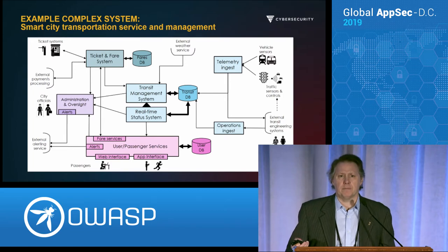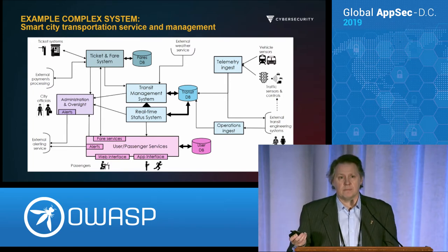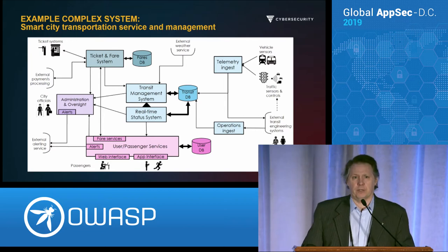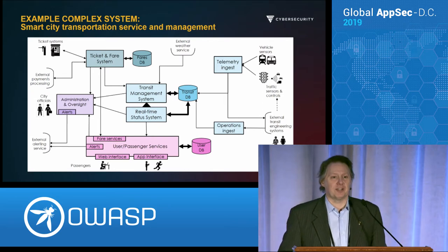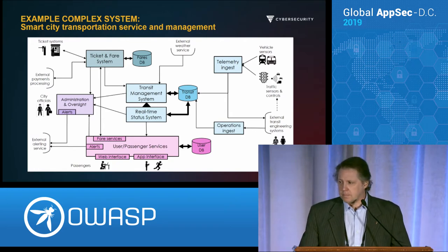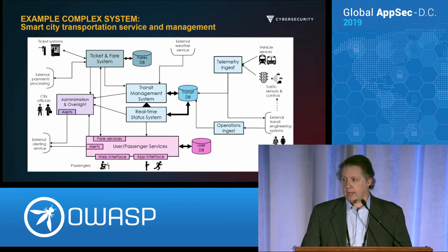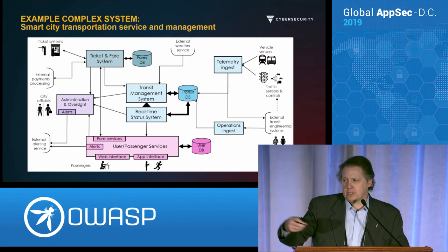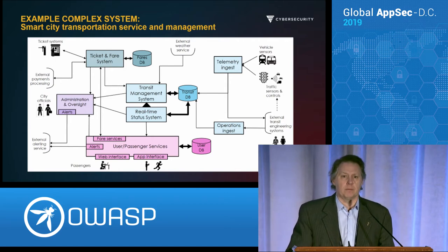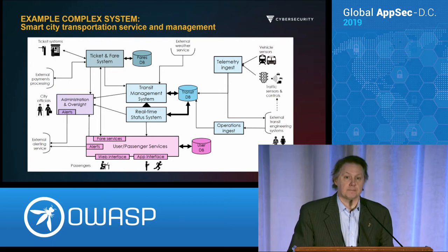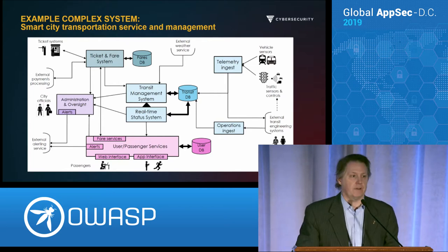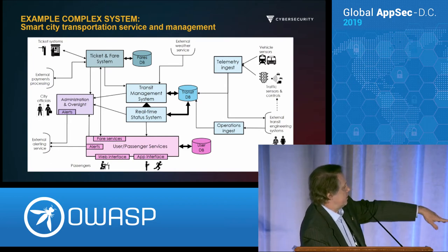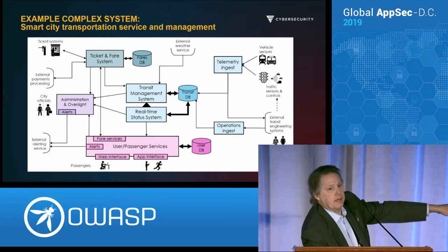In the principles that are coming up, we're going to use a smart city example. I wanted to put the actual U.S. signals intelligence system in here, but it wouldn't fit. It is a large complex composite system — I did a lot of security architecture work for it about a decade ago. So this smart city example is adapted from a number of examples I found in academic literature about smart cities.